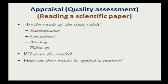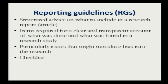Terms like randomization, allocation concealment, and blinding are applicable to RCTs and are among the most important things in critical appraisal of an RCT. Reporting guidelines — such as PRISMA for systematic reviews and CONSORT for RCTs — are checklists of items specifying procedures that should have been followed in conducting a study to ensure it is free from bias. Reporting guidelines are not only for the person doing the research but also for the reader, to assess whether the article is good enough to be relied upon.